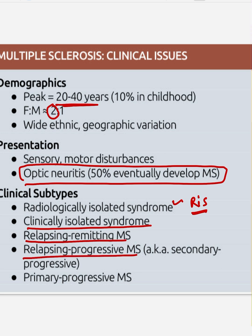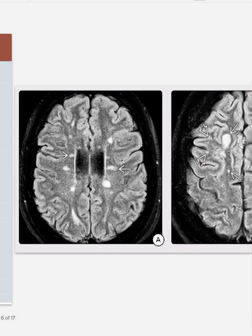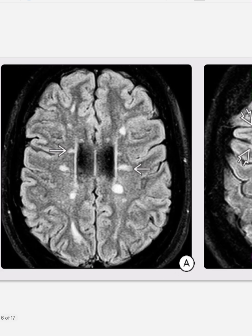Further subtypes include clinically isolated syndrome with only clinical symptoms, relapsing-remitting MS, and relapsing-progressive MS — also called secondary progressive MS. In primary progressive MS, the disease is progressive from onset. In relapsing-progressive MS, once the disease relapses, it then follows a progressive course.